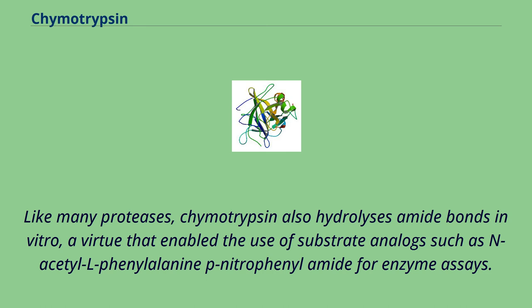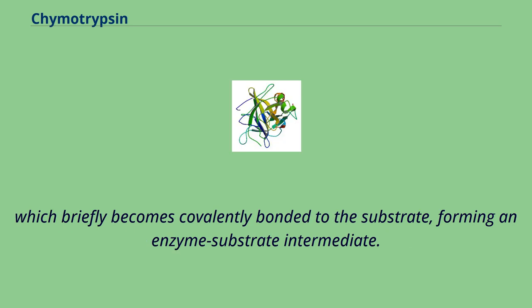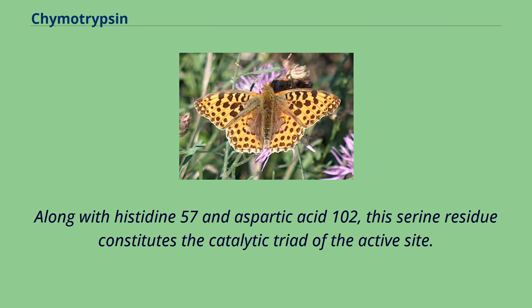Like many proteases, chymotrypsin also hydrolyzes amide bonds in vitro, a virtue that enabled the use of substrate analogs such as N-acetyl-L-phenylalanine-p-nitrophenylamide for enzyme assays. Chymotrypsin cleaves peptide bonds by attacking the unreactive carbonyl group with a powerful nucleophile — the serine-195 residue located in the active site of the enzyme — which briefly becomes covalently bonded to the substrate, forming an enzyme-substrate intermediate. Along with histidine-57 and aspartic acid-102, this serine residue constitutes the catalytic triad of the active site.